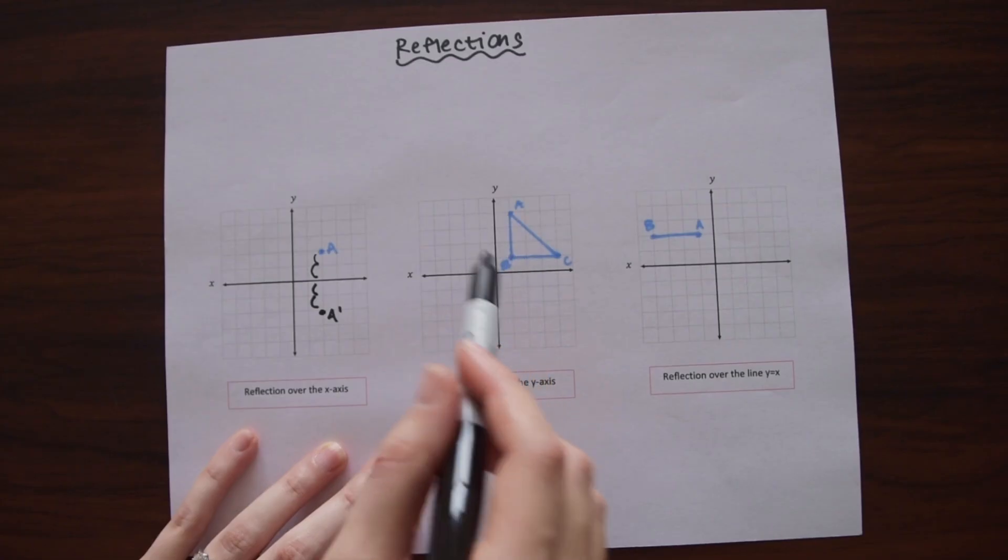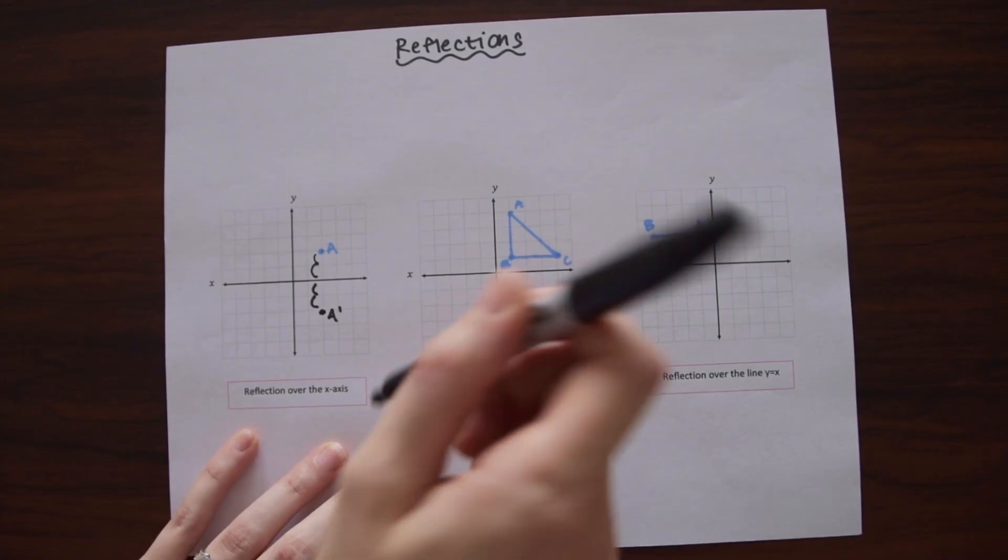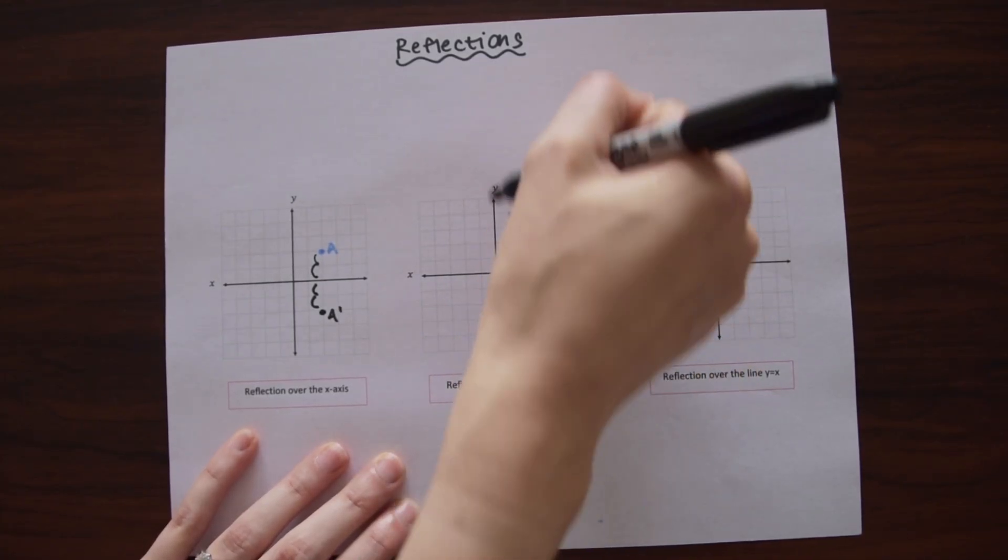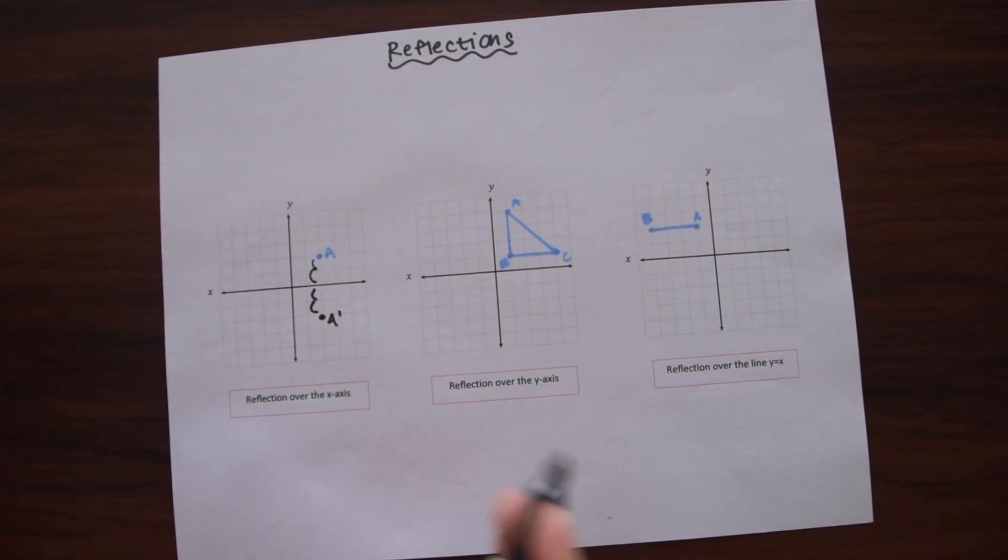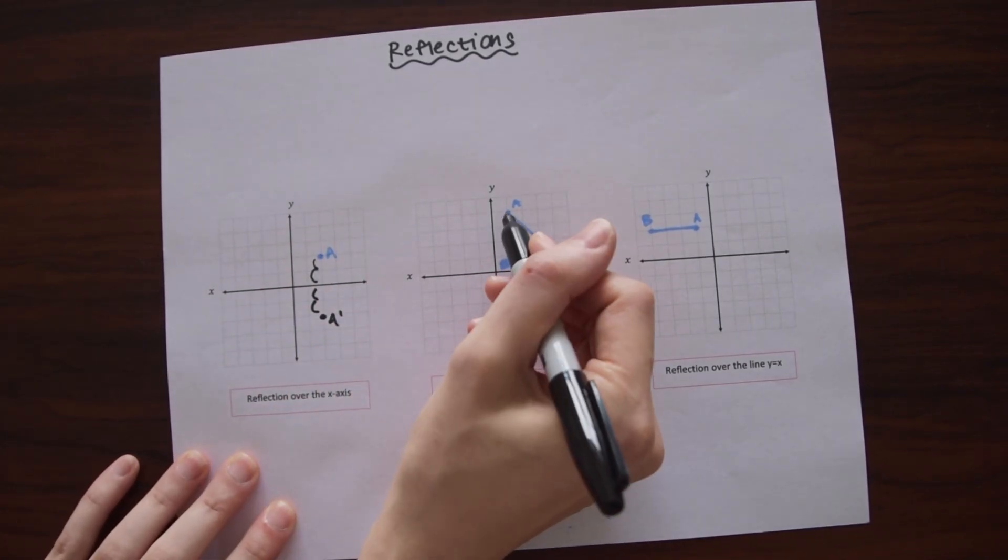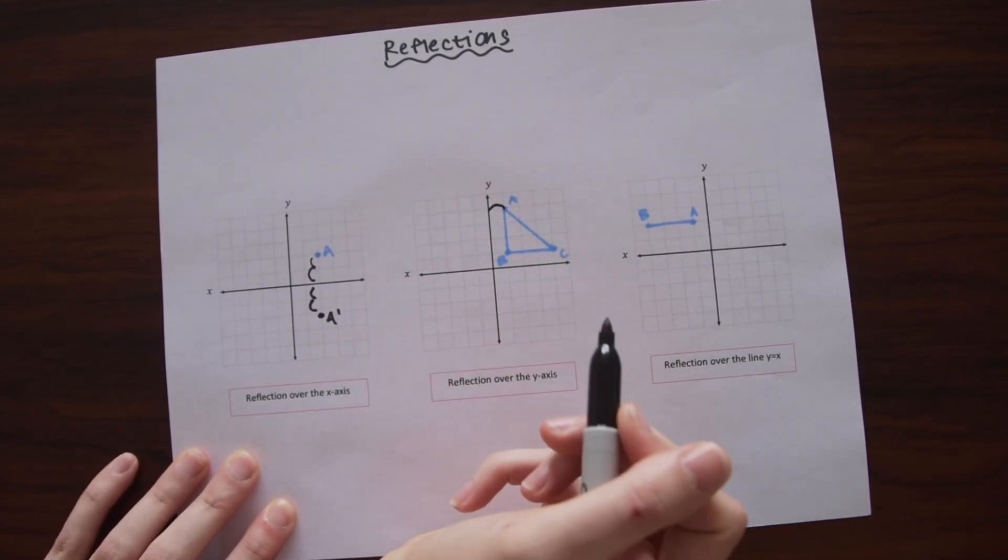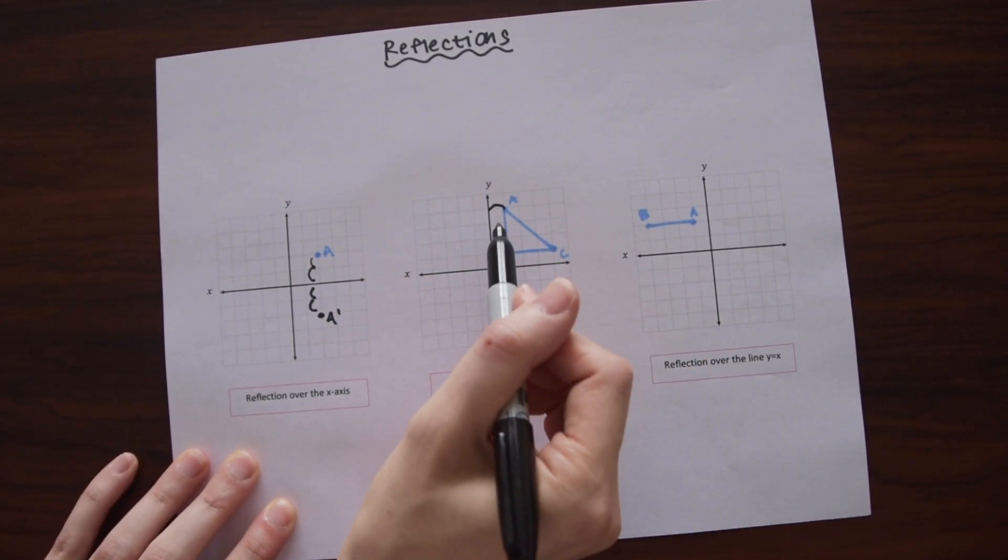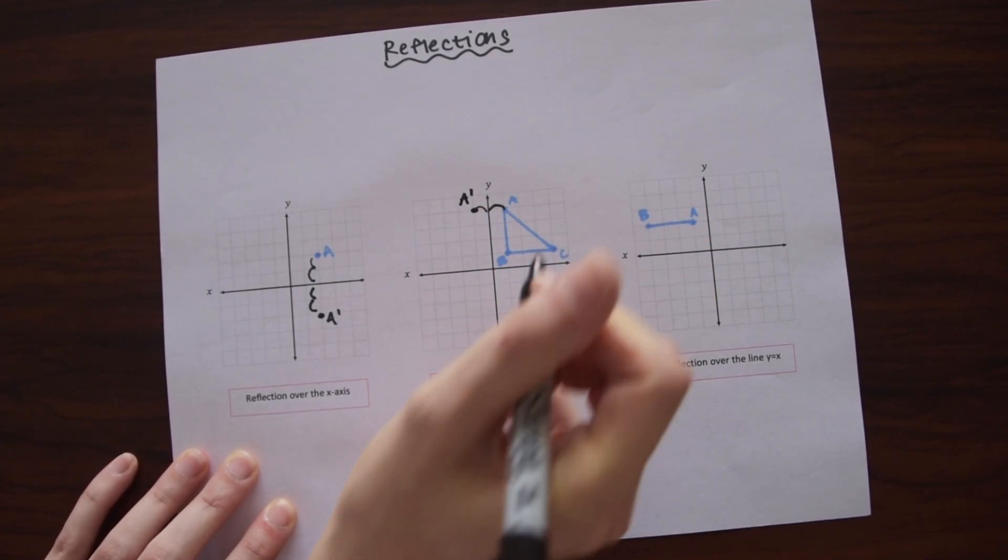We want to reflect a triangle this time. We have triangle ABC and we want to reflect it over the y-axis. So the y-axis is this one here, the vertical line labeled y. We have a couple more points this time so we're just going to go one by one reflecting each point. If you look at point A, notice that it's one unit distance away from the y-axis. And now to reflect our point A, we're just going to go one unit to the other side and label it A prime.